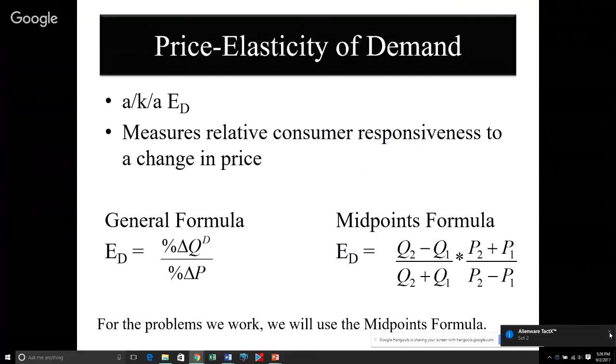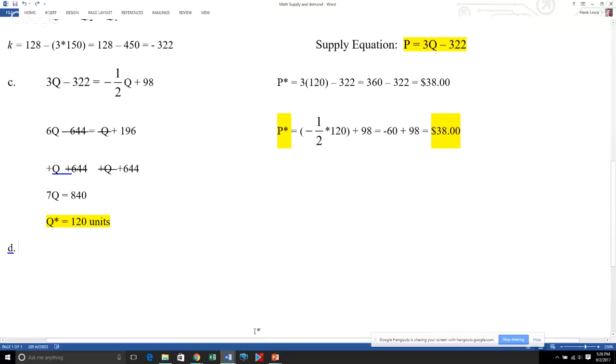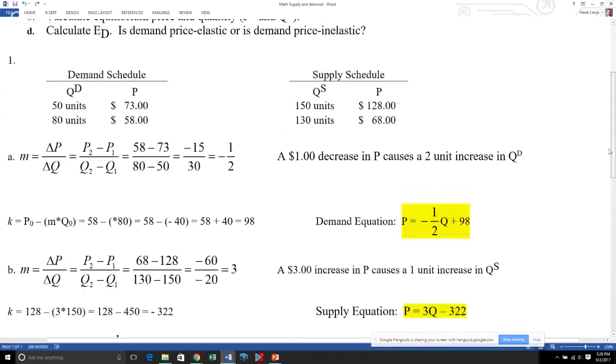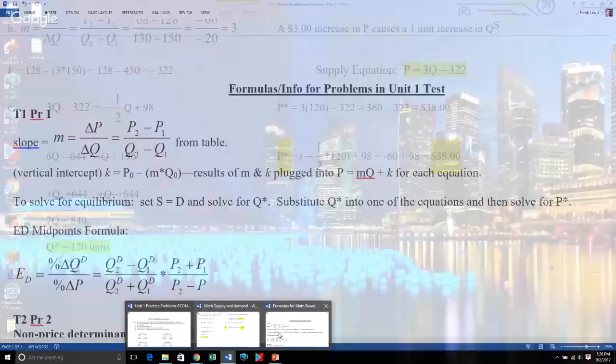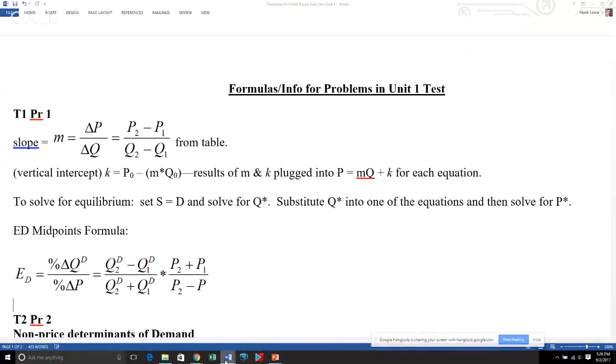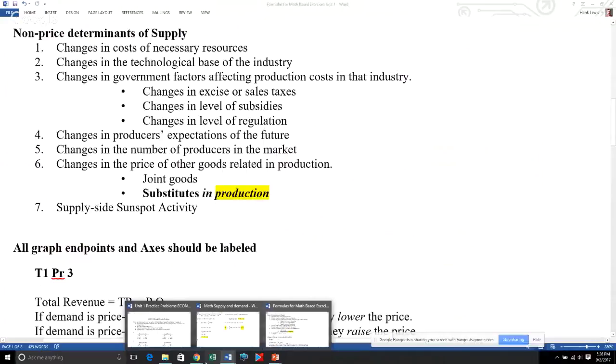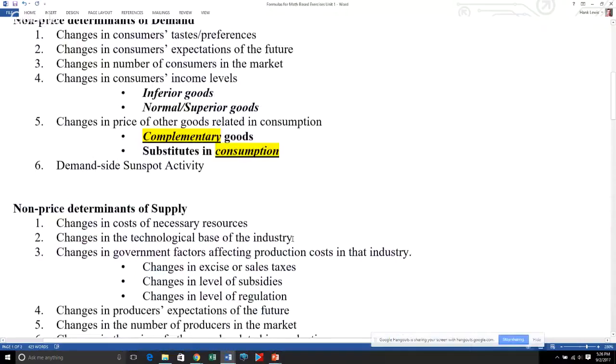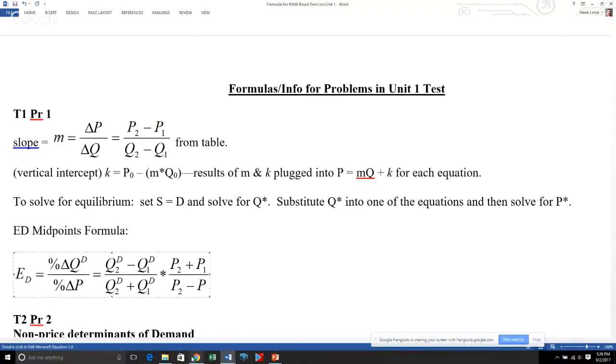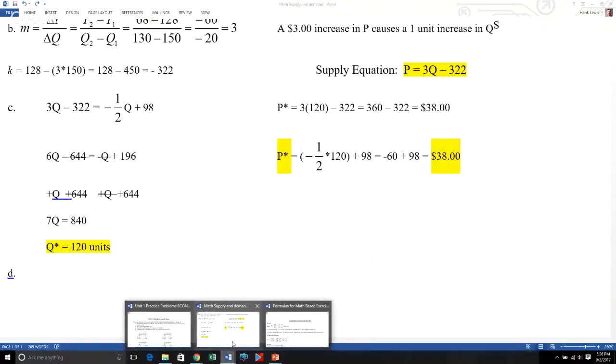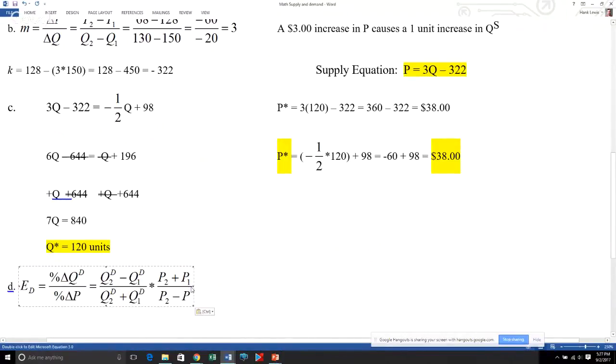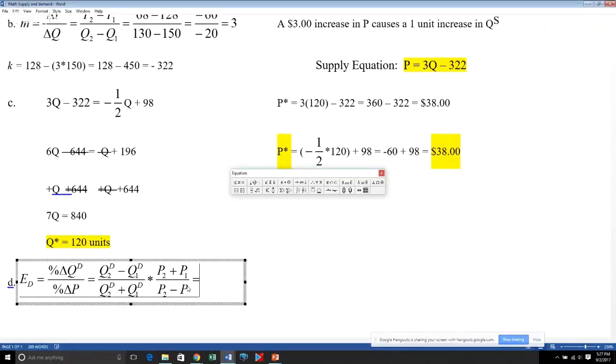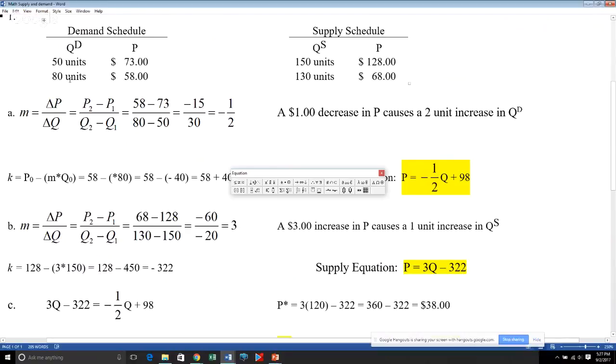We're going to go through an example now. I'm going back to this Word document here where we were working on all this information earlier. I want to call everybody's attention to the demand schedule because this is where the data is coming from for the E sub D coefficient. I'm also going back to the formula sheet that everybody was emailed and I'll copy this formula so we have something to start with.